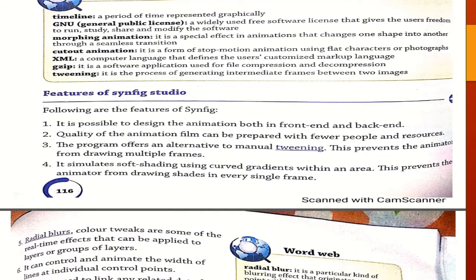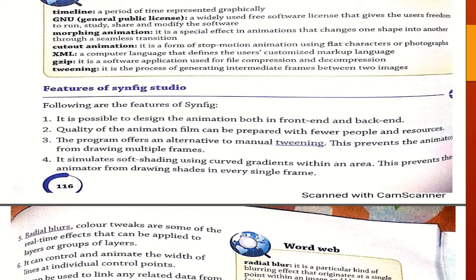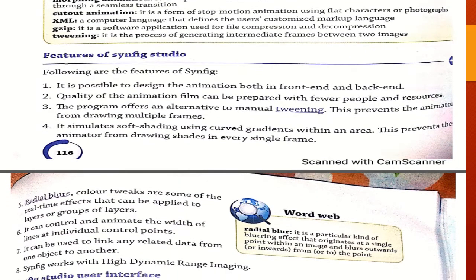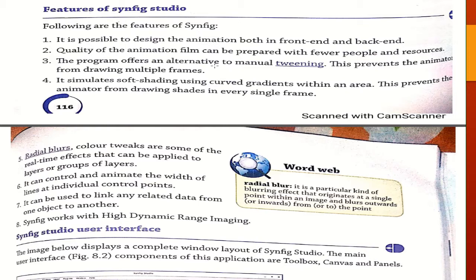There are many features available in Synfix Studio. First, it is possible to design animation both in front end and back end. Quality animation frames can be prepared with fewer people and resources. The program offers an alternative to manual tuning, which prevents the animation from drawing multiple frames, and it simulates soft shading using curved gradients within an area. Radial blurs and color tricks are some real-time effects that can be applied to a layer or group of layers. It can control and animate the width of lines at individual control points and can also link related data from one object to another.